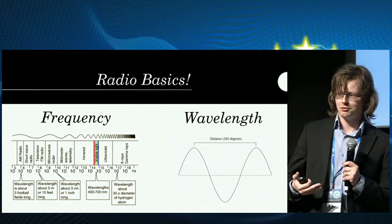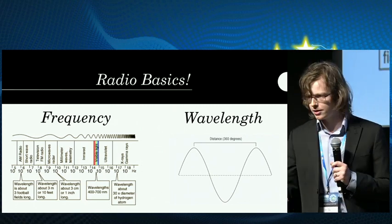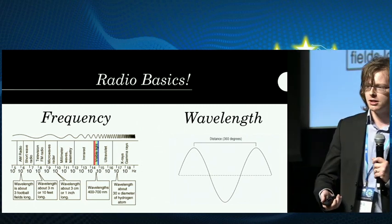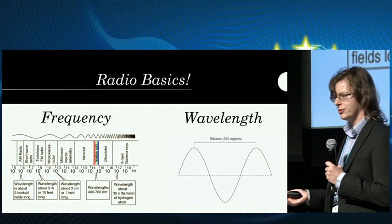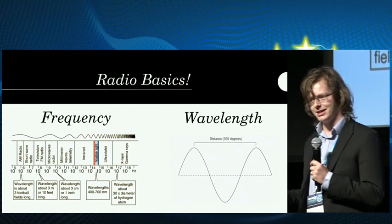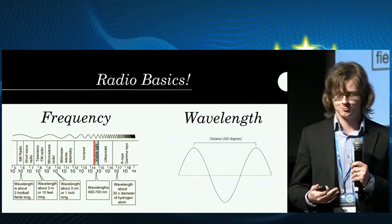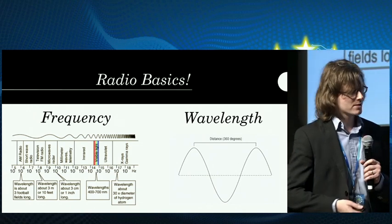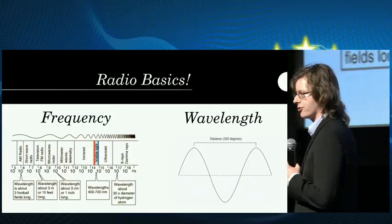An antenna, in order to be effective, has to be divisible into the wavelength — ideally half the wavelength long. So for that two meter band, an ideal antenna length would be half that: one meter. People in the radio world will argue this, but that's the general rule. So: higher in frequency, the more it struggles to get through objects, and the shorter the antenna you need.